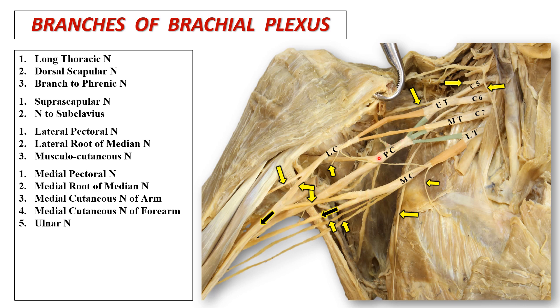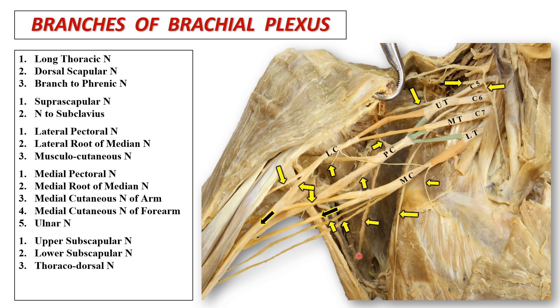Branches from the posterior cord are five in number: the upper and lower subscapular nerves, the thoracodorsal nerve, the axillary nerve, and the radial nerve. Thank you for watching.